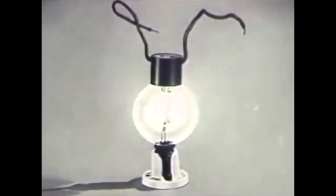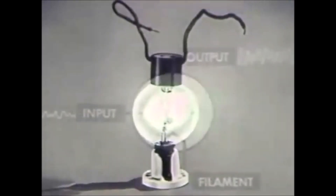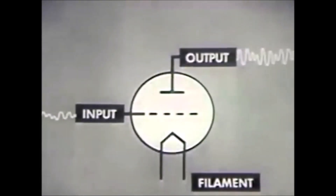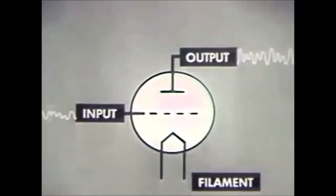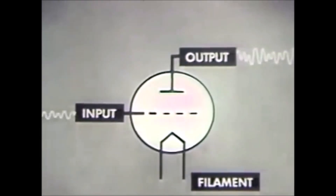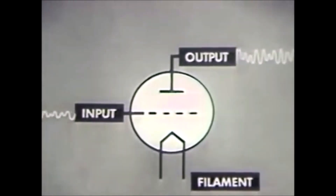He called this amplifying tube an audion. Weak signals applied to the input or grid of the audion caused similar and much stronger signals to flow from the plate or output.